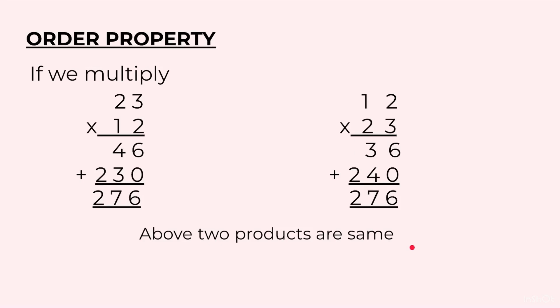What we notice here is when we change the order of the numbers that are being multiplied, in the first case we have 23 into 12, in the second case we have 12 into 23, the answer comes out to be same.